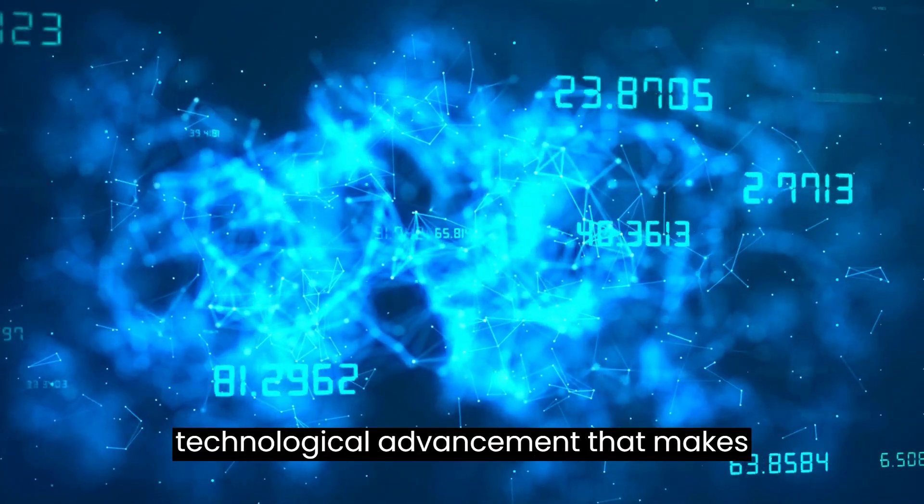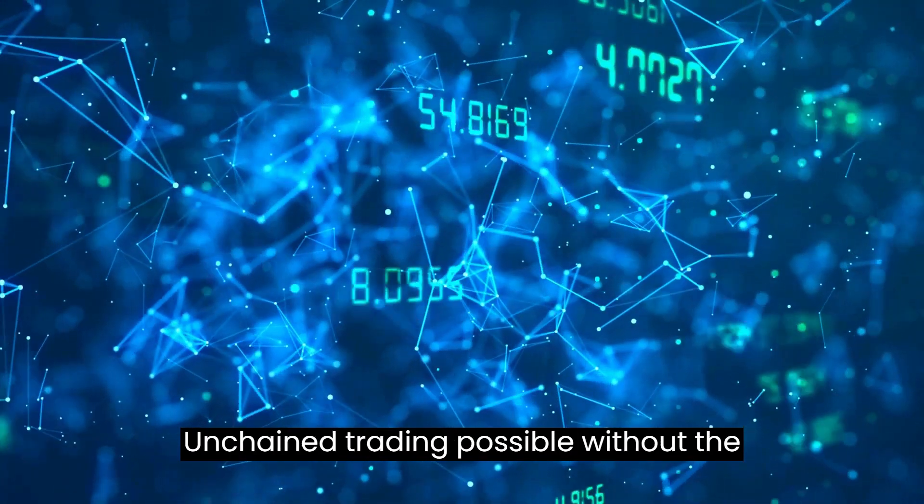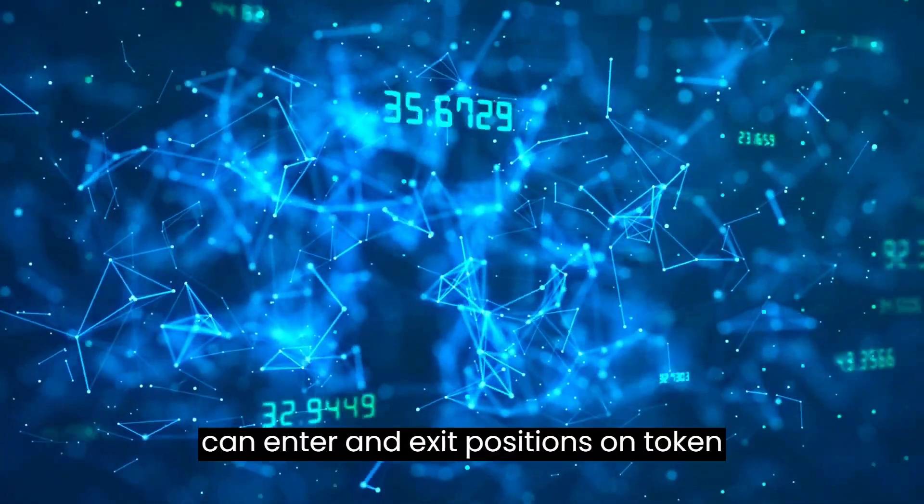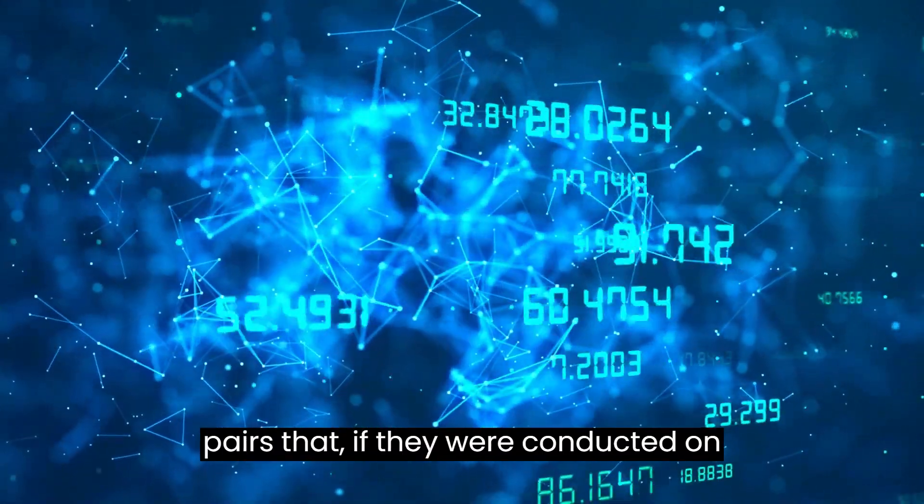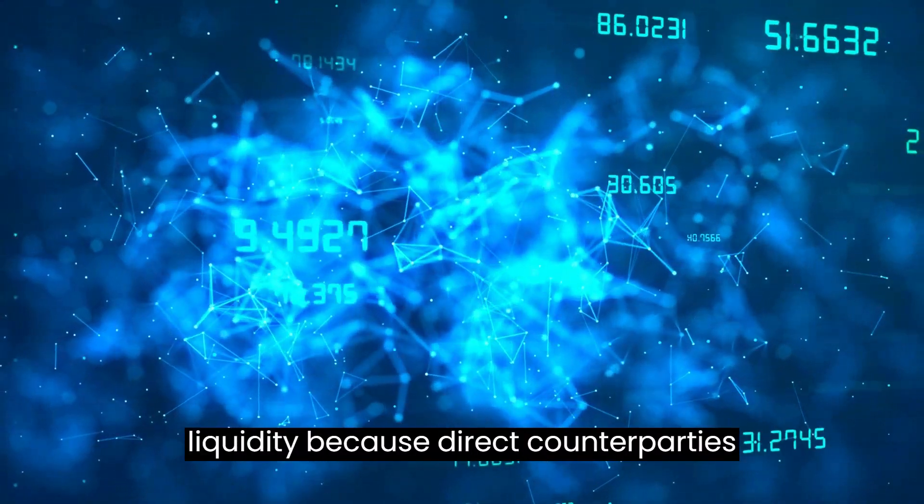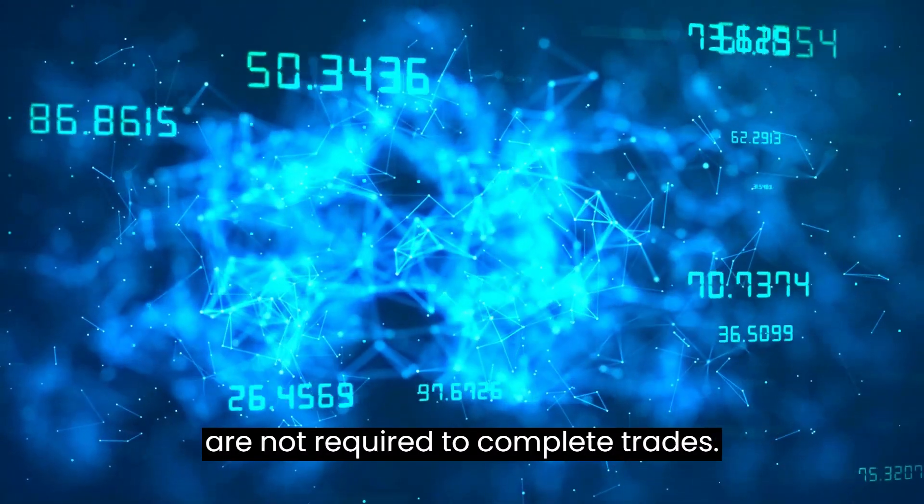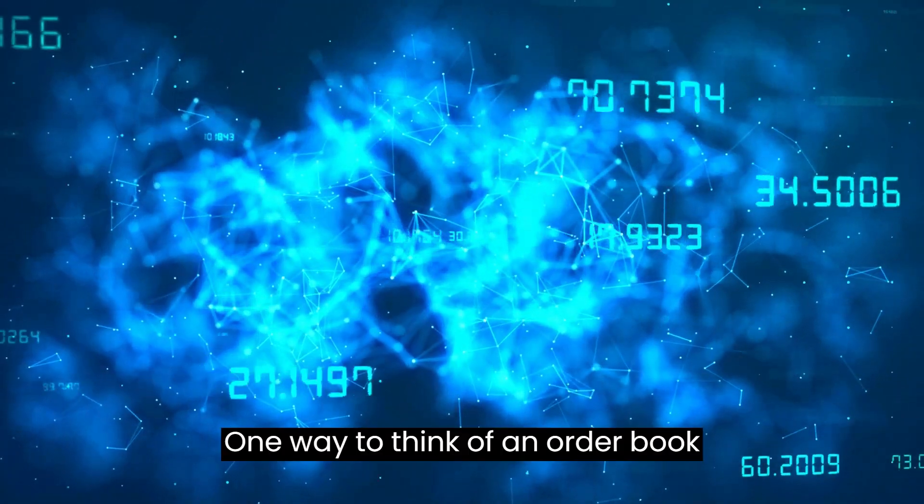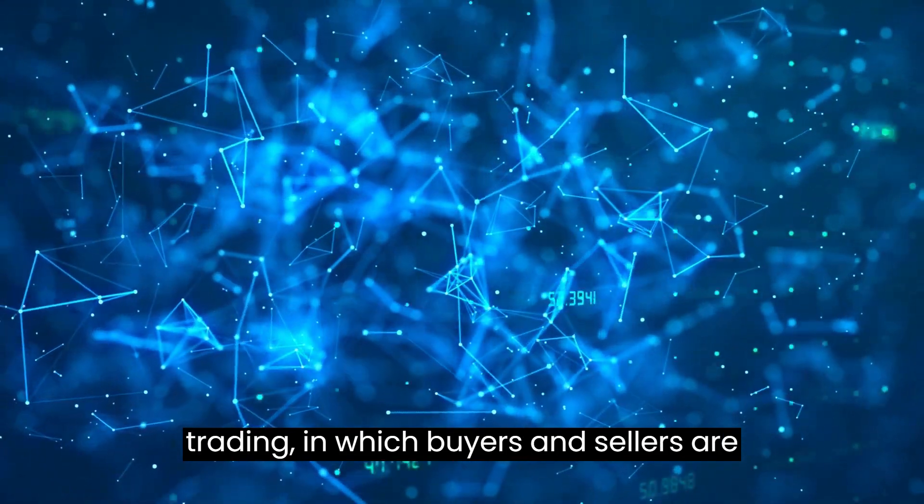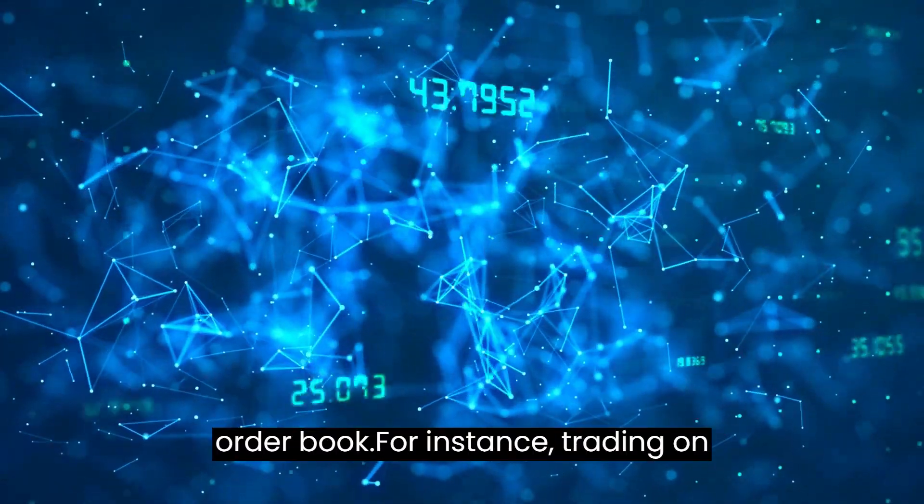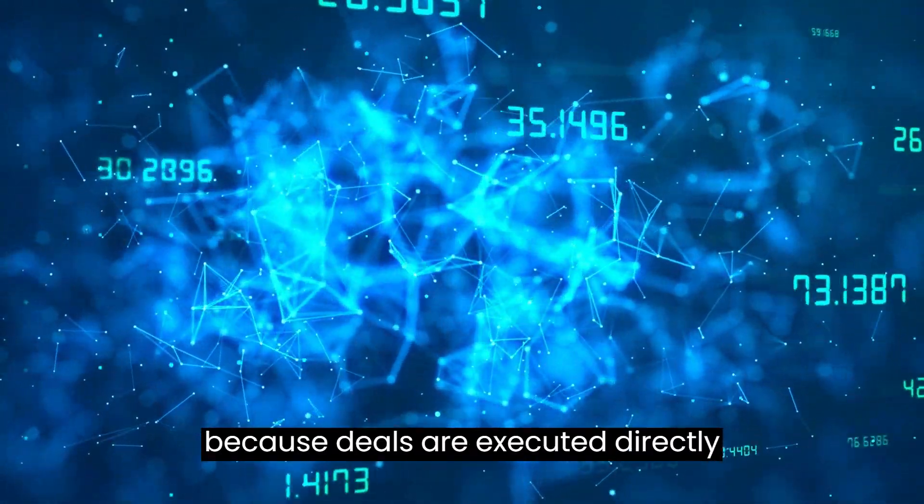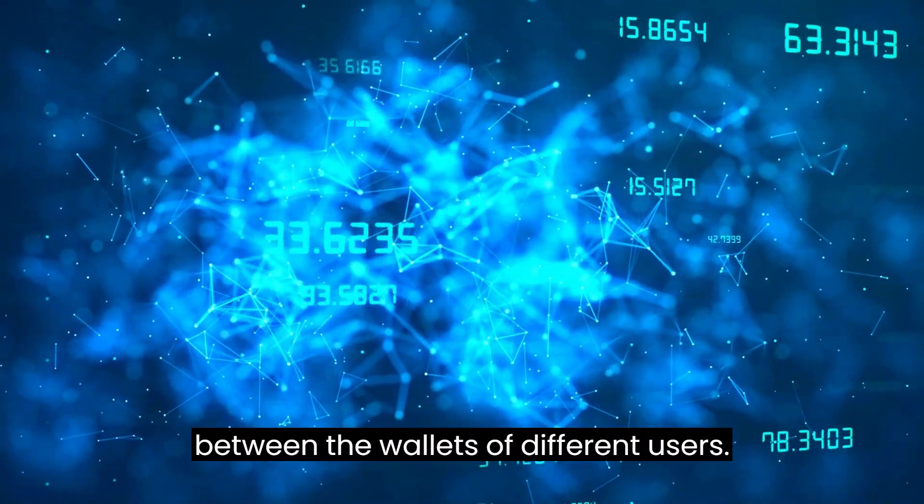They represent a significant technological advancement that makes on-chain trading possible without the requirement of an order book. Traders can enter and exit positions on token pairs that, if they were conducted on order book exchanges, would likely be considered to have a very low level of liquidity because direct counterparties are not required to complete trades. One way to think of an order book exchange is as a form of peer-to-peer trading, in which buyers and sellers are brought together through the use of the order book. For instance, trading on Binance DEX is considered peer-to-peer because deals are executed directly between the wallets of different users.